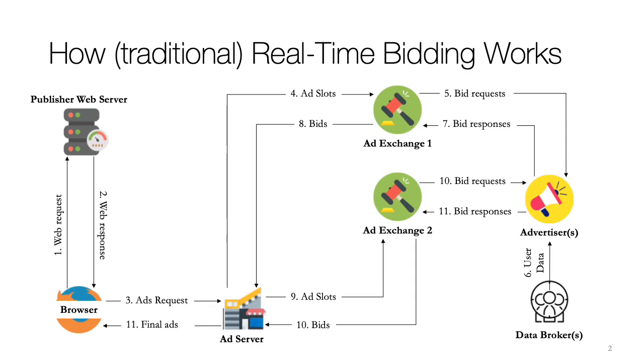So this is like a waterfall process — ad exchange one, and if that doesn't meet the criteria, then ad exchange two, and if that doesn't meet the criteria, ad exchange three, and so on.